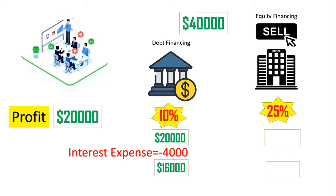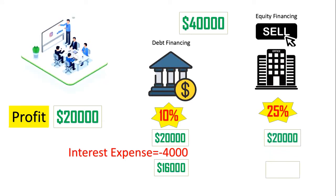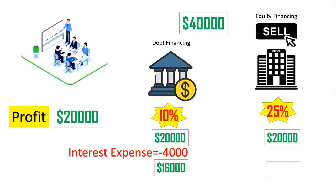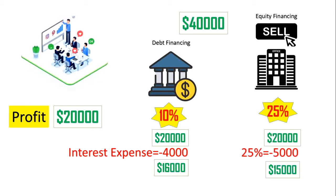Conversely, had you used equity financing, you would have zero debt and therefore no interest expense. However, you would keep only 75% of your profit, because the other 25% is owned by your neighbor as a shareholder. Therefore, your personal profit would be $15,000, which is 75% of $20,000.